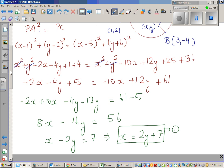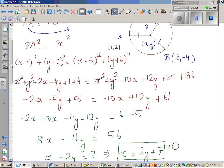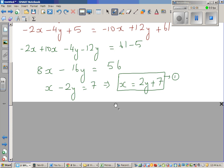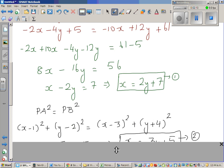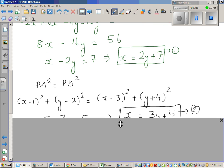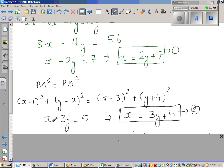So using the same principle, you can take PA equals PB, and that's what I've done. I want you to do it yourself. If you expand this, you will get a form like this. I've directly written the answer; that's something for you to do. x - 3y = 5, so x = 3y + 5.